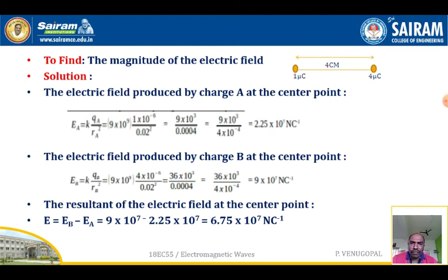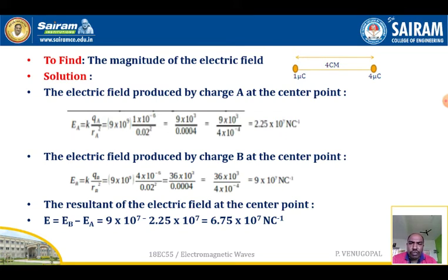You are required to find the magnitude of the electric field at the center between charge A and charge B. The electric field produced by charge A at the center point: EA equals k times QA divided by rA-squared. k is 9 times 10 to the power 9, QA is 1 micro-coulomb, and rA is 0.02 meters. Substituting: 0.02 squared gives 0.0004, so EA equals 9 times 10 to the power 9 divided by 4 times 10 to the power minus 4, which equals 2.25 times 10 to the power 7 newtons per coulomb.